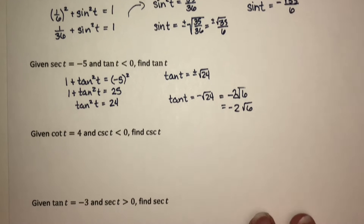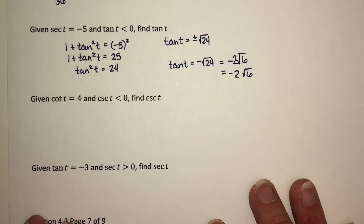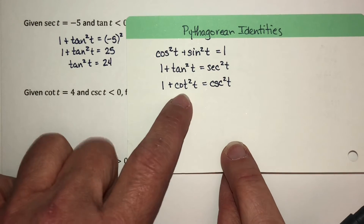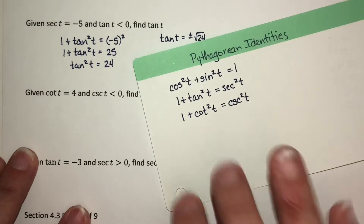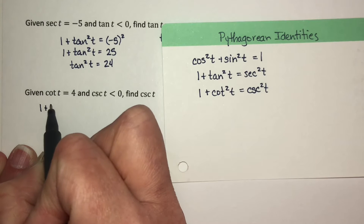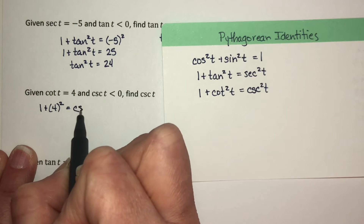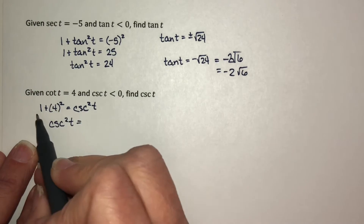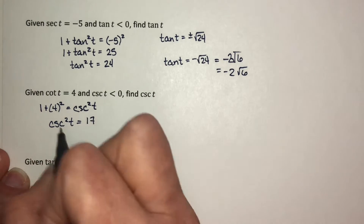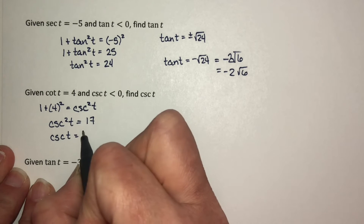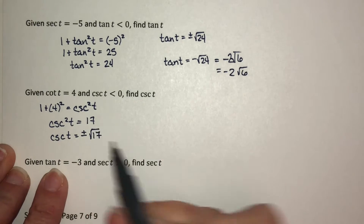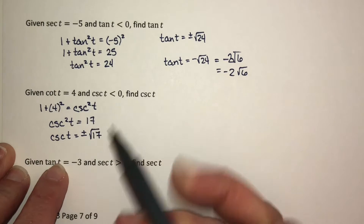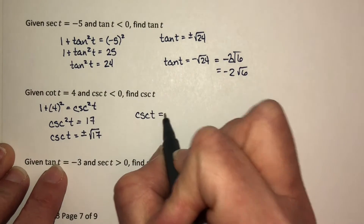Given that cotangent of t equals 4 and cosecant of t is negative, find cosecant of t. We have a Pythagorean identity relating cosecant and cotangent. Plugging in: 1 plus 4² equals cosecant squared of t, so cosecant squared equals 1 plus 16, which is 17. Therefore cosecant of t is plus or minus the square root of 17. Since 17 is prime it doesn't simplify, and we want the negative answer, so cosecant of t equals negative square root of 17.